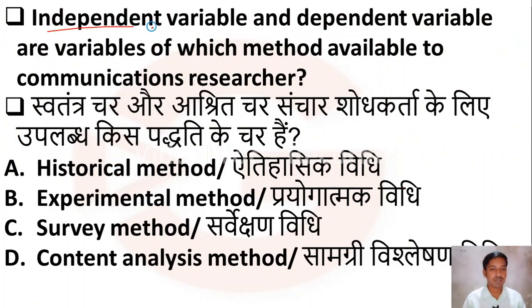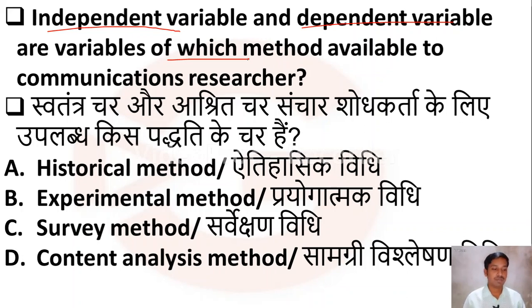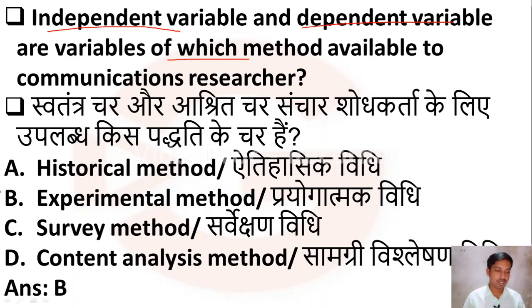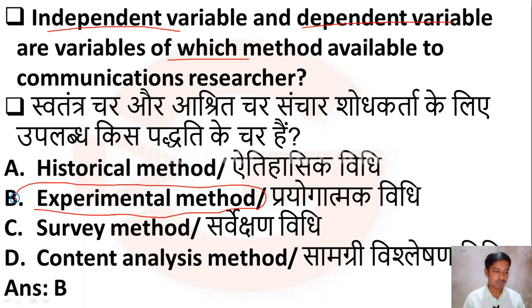The next question: independent variable and dependent variable are variables of which method available to communication researchers? Option A: historical research, Option B: experimental method, Option C: survey method, Option D: content analysis method. The right answer is Option B — experimental method.